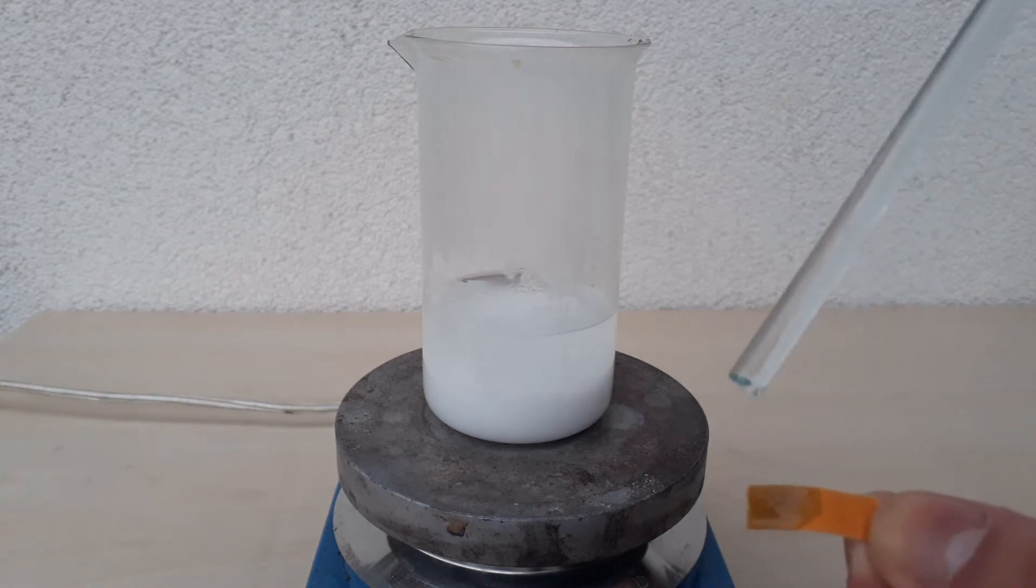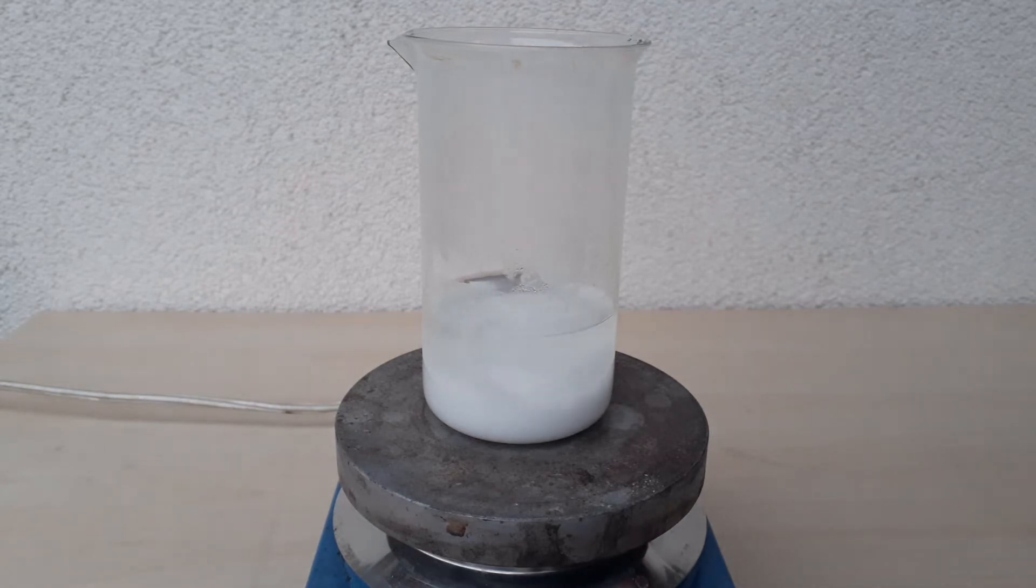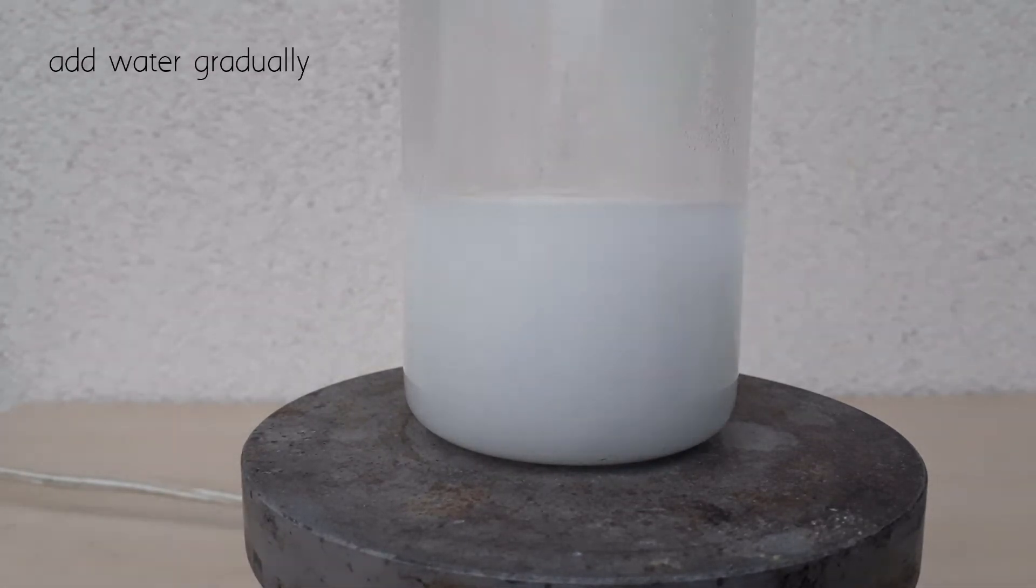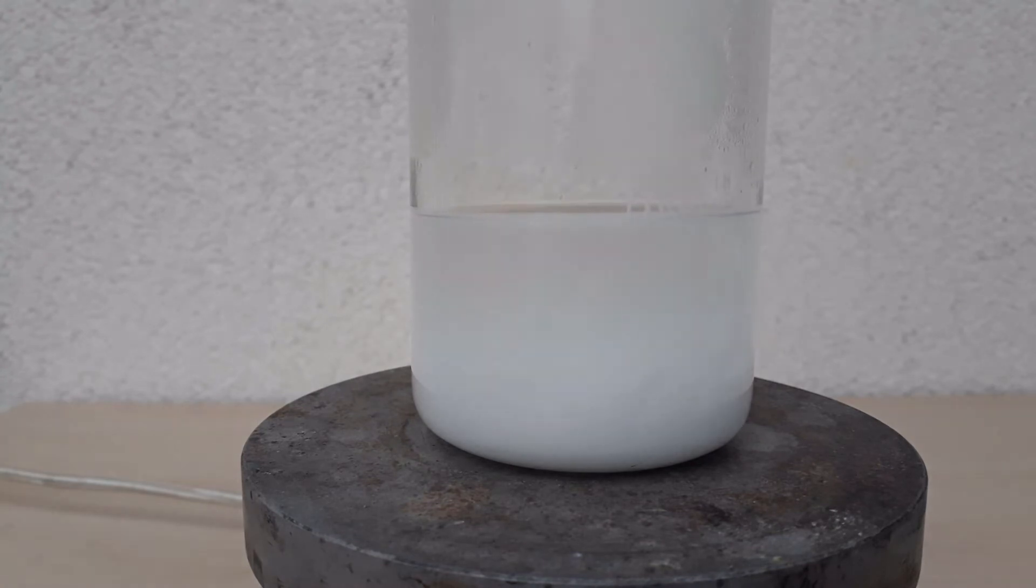I tested the pH of the solution, and it turned out that I hit the neutralization point pretty well by chance. Now I start heating up the solution until it boils, and add more and more water until all the milkiness disappears.